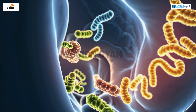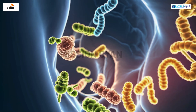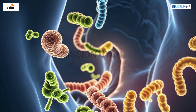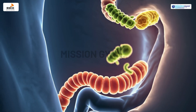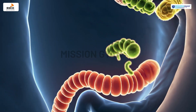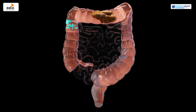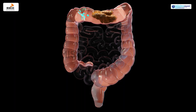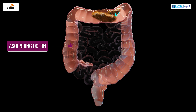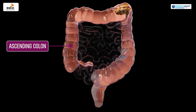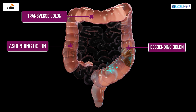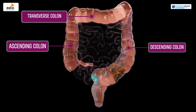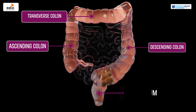The large intestine also houses billions of beneficial bacteria that help break down some remaining nutrients. The chyme is transported from the ascending colon to the transverse colon to the descending colon and finally to the rectum.